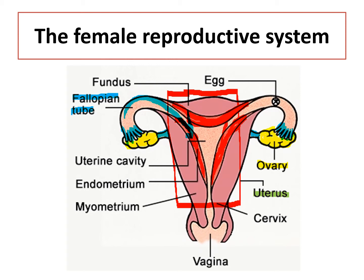Your uterus narrows down into a structure called the cervix. During the process of natural birth, the cervix will dilate and allow the baby to exit from the uterus and enter the world through the vagina. The vagina is the birth canal during natural birth, and it is also responsible for the insertion of the penis into the female reproductive system during the process of copulation.